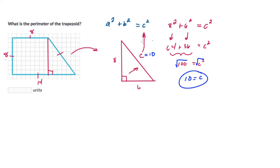So I know the missing side length is 10, and that means the side length of the trapezoid is 10. If I add them all up to find the perimeter now, 8 plus 8 is 16, plus 10 is 26, plus 14 is 40 units.